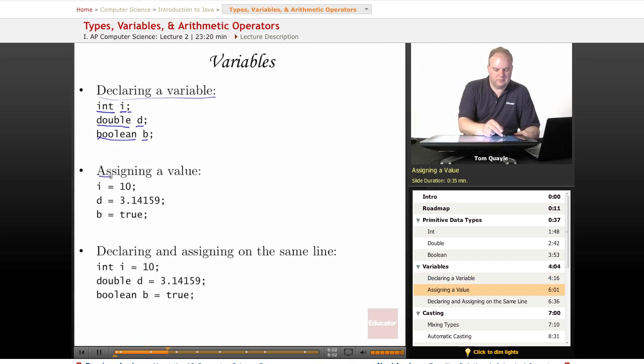We assign a value to a variable by putting the name of the variable, then one equal sign, then the value that we want to assign it to. We must assign it a value that is consistent with the type of the variable. So i is an int, so we can assign it an int value. d was declared a double, so we can assign it a double value. b was a boolean, so b can only be assigned either true or false.